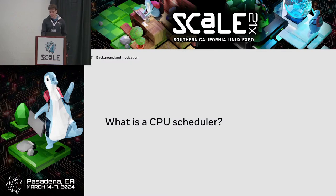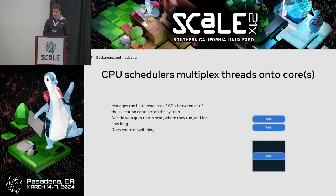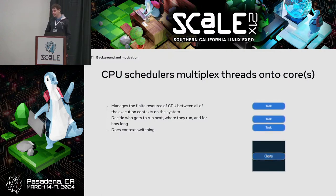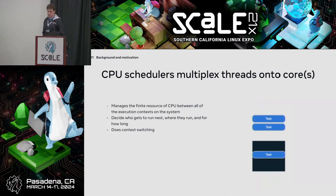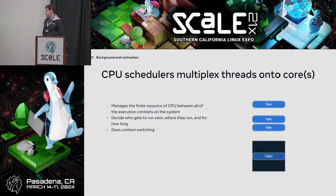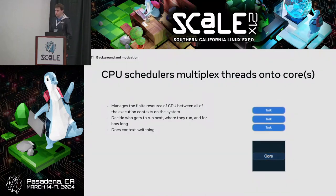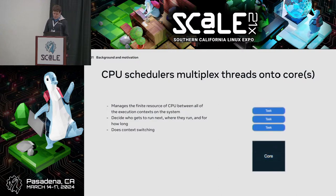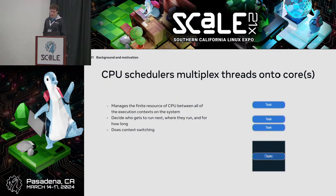Very quickly, I'll cover what the CPU scheduler is and what it does. Very classically, you have a single core and you may have multiple tasks — I may use the term 'thread' pretty interchangeably with 'task', but it means the same thing. Some entity that I want to schedule, and the scheduler's job is just sharing the core. You have one physical core, multiple things that want to execute as if they are running on their own hardware, and so the scheduler is deciding which task to run next, where they run, all that sort of stuff.